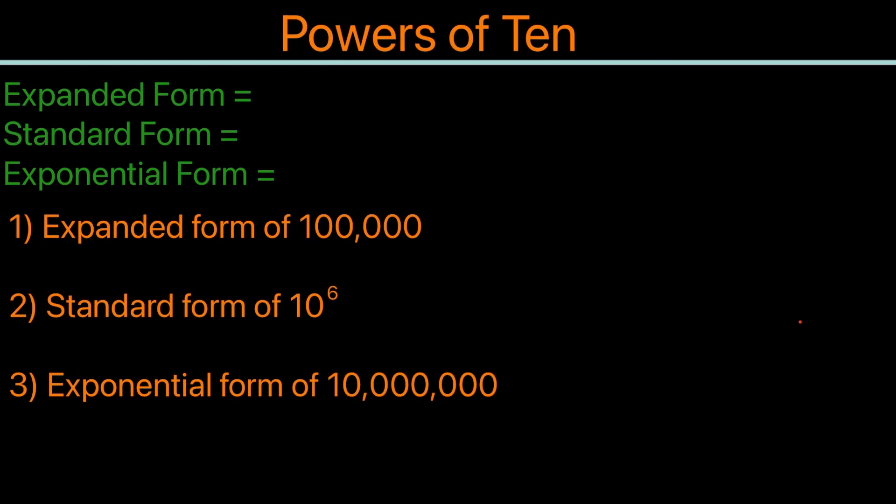We'll take an example of 10,000. For 10,000, what is the expanded form? Expanded form would be the number of tens that it would take to get to that number, and we will multiply by tens. It would look something like this: 10 times 10 times 10 times 10. This is the expanded form of 10,000.